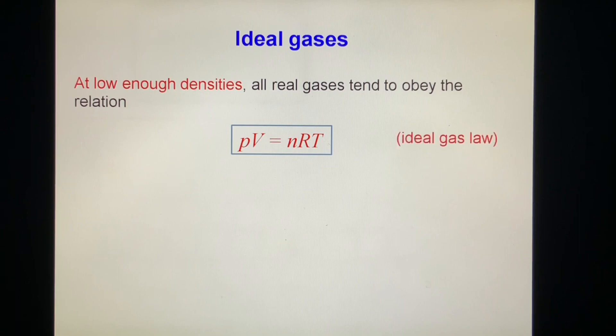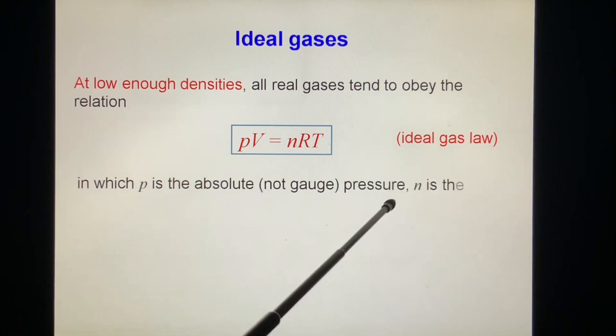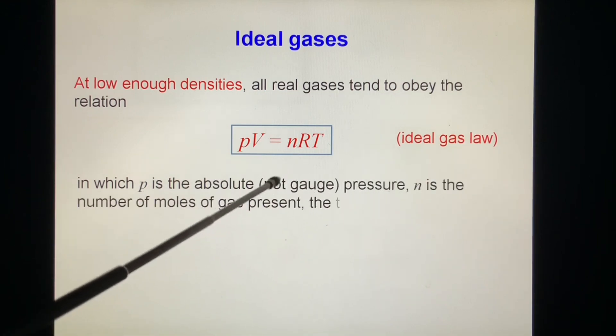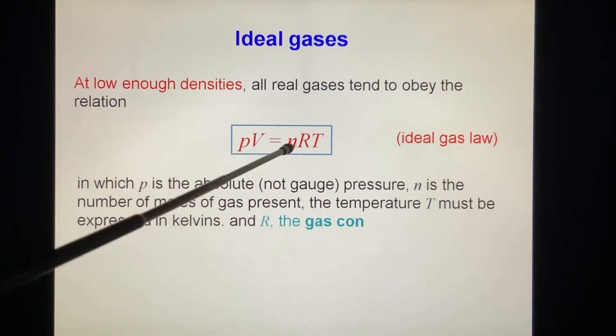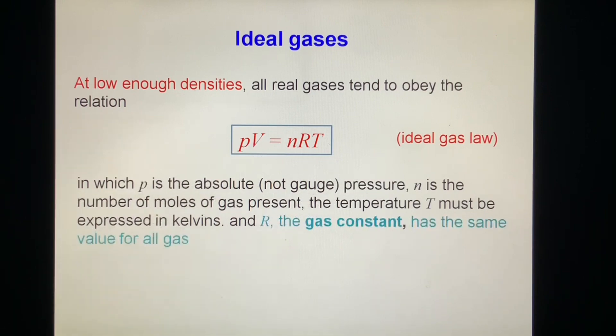Ideal gases. At low enough density, all gases tend to obey the relation PV equals nRT. This is the ideal gas law in which P is the absolute, not gauge pressure. Gauge pressure, we learned before, is the absolute pressure minus the atmosphere pressure. n is the number of moles of gas present. The temperature T must be expressed in Kelvin, not in Celsius. And R, we call the gas constant, has the same value for all gases, namely 8.31 joules per mole per Kelvin.